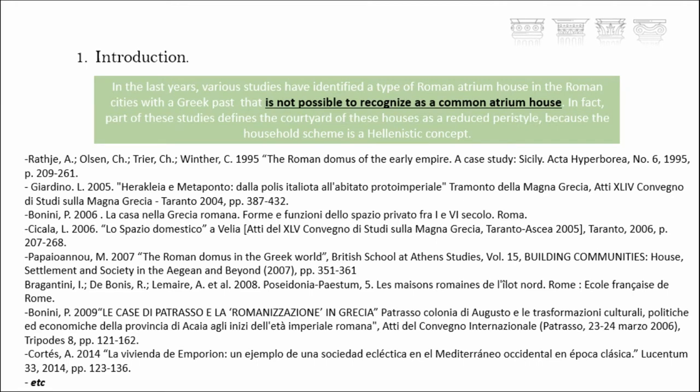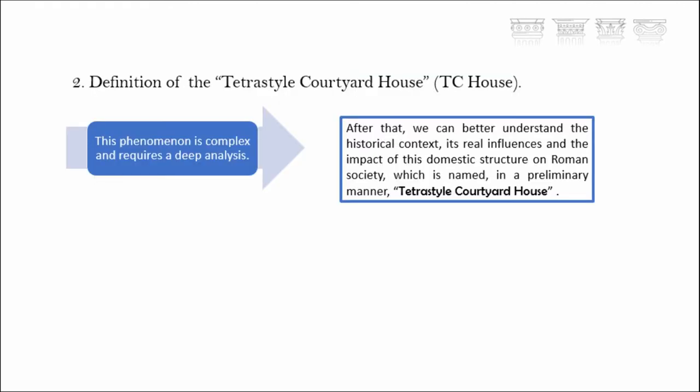It's important to say that in recent years various studies have identified a type of Roman atrium house in these Roman cities with a Greek past that cannot be recognized as the traditional or common Roman atrium. In fact, part of these studies define this courtyard type, this atrium, as a reduced peristyle, because the household scheme of the house is a Greek concept. It's clear that this phenomenon is complex and requires very deep analysis, and this type of domus has been detected in some archaeological sites but has not had a complete and systematic study.